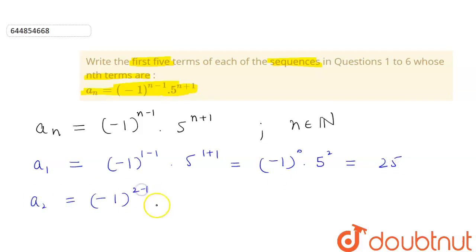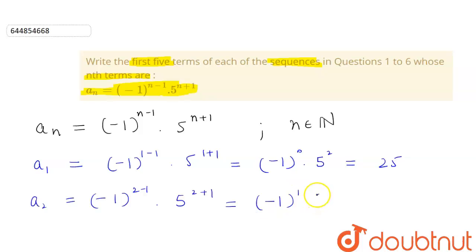The value of a2 will be (-1)^(2-1) × 5^(2+1), that is equal to (-1)^1 × 5^3, so this will be equal to -125.